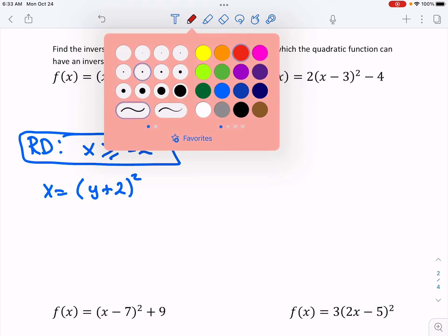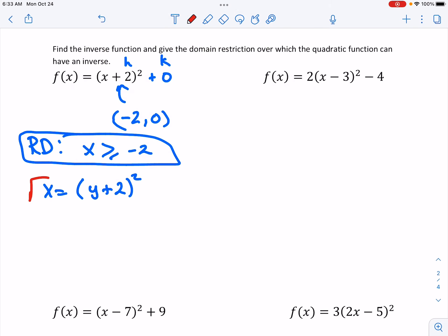Then we can take the square root of both sides. Square root cancels out the square. Now we get y by itself.